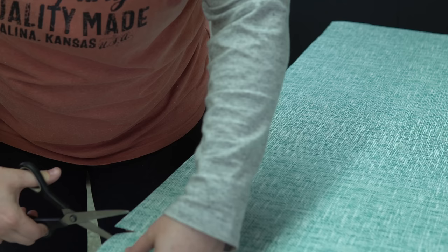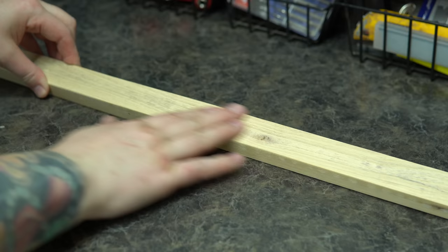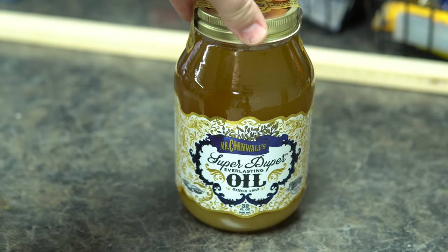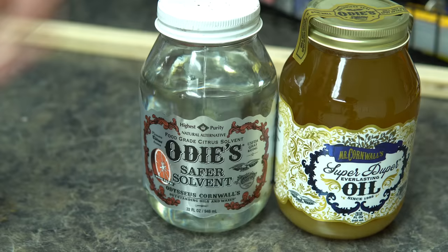I sanded a section of that solid elm trim piece that I had removed, and the reason I'm doing this is because I want to create a stain using Odie's oil and their pigments. So normally to make a stain I use the super duper everlasting oil mixed with some Odie's Safer Solvent and then of course the creative color pigments.